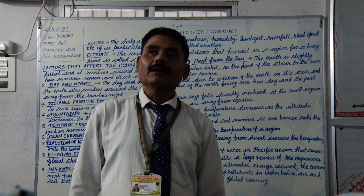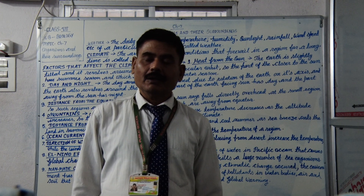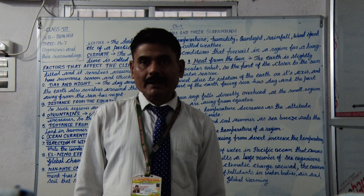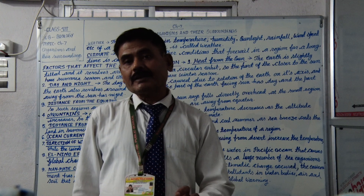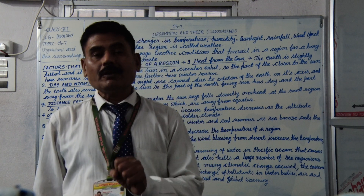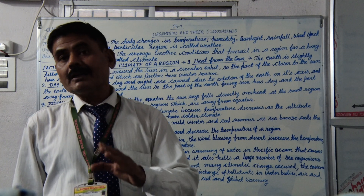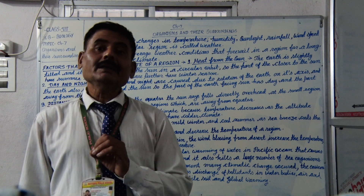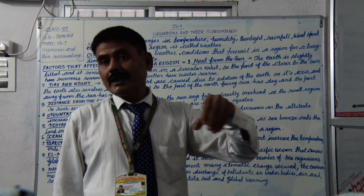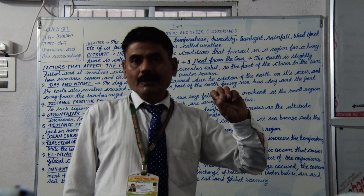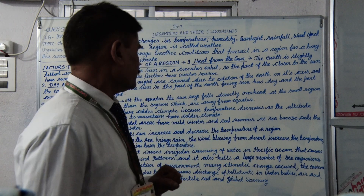Sometimes the water of oceans has warm currents. These also affect the weather and climate of a place. Because when warm currents of water come in contact with air, they raise the temperature of the air, and so the temperature of the surrounding area also rises. So ocean currents can increase or decrease the temperature.